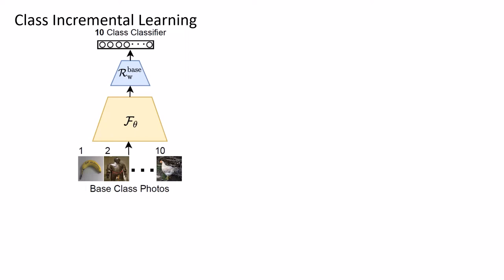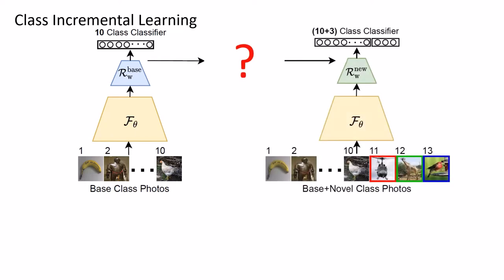Say we have a 10-class photo classifier and we want to extend it to 3 new classes to make a 13-class classifier. A suitable option would be class incremental learning. Being the most realistic one amongst its other variants, we focus on few-shot class incremental learning. It dictates the model to learn new classes with very few example samples, just like humans.